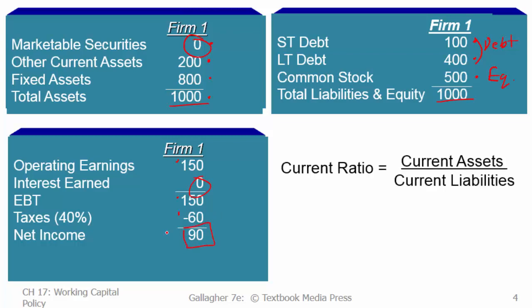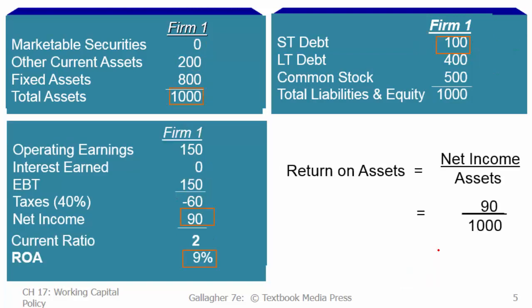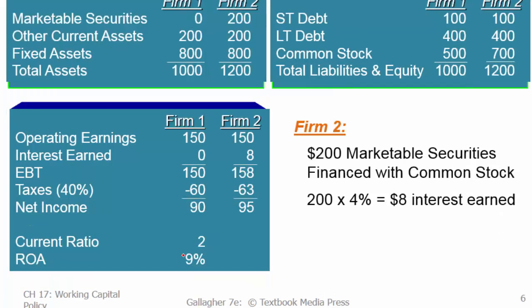From that we can calculate the current ratio — the measure of liquidity. $200 million in current assets divided by $100 million in current liabilities gives us a current ratio of 2. Remember, the rule of thumb is you want that to be 2 or higher to be sufficiently liquid. Now let's think about return on assets: net income of $90 million divided by assets of $1 billion gives us a return on assets of 9%. That's a good baseline — now let's throw in Firm 2 for comparison.